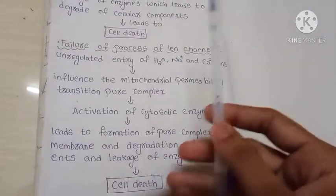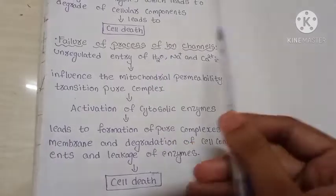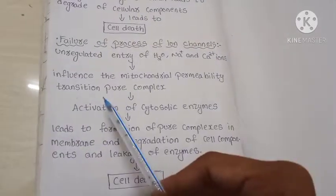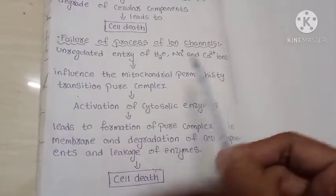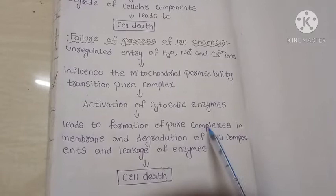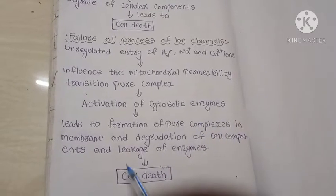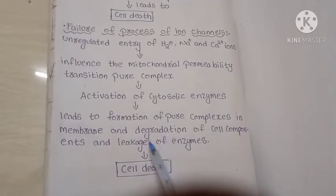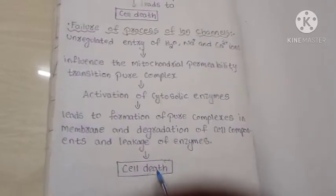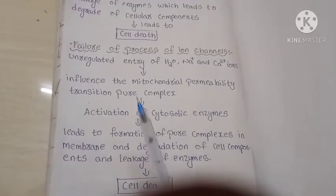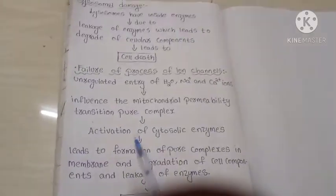Overall, we can say that unregulated — meaning there is no limit to the entry of H₂O, sodium, and calcium ions — leads to mitochondrial permeability. It activates cytosolic enzymes, leads to formation of a pore complex in membranes, degrades cellular components, and causes enzyme leakage, which leads to cell death. This is the overall concept of enzyme leakage and how cell death occurs.